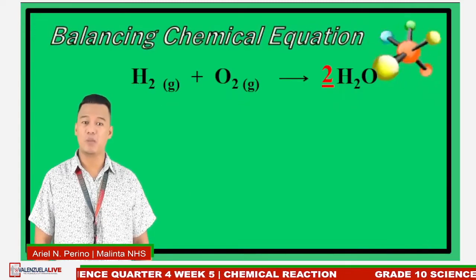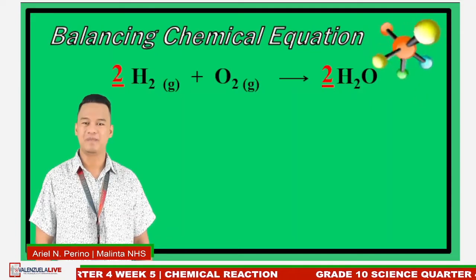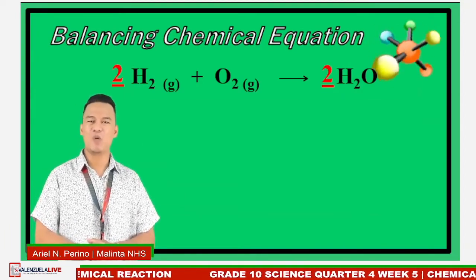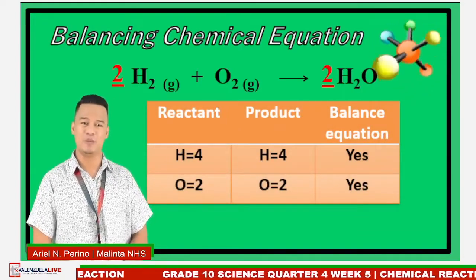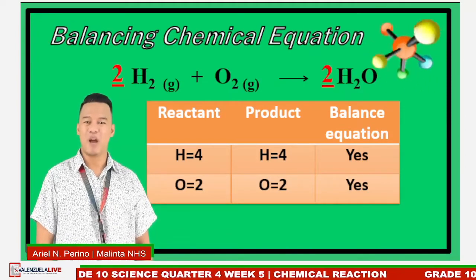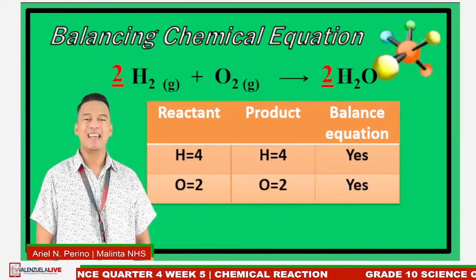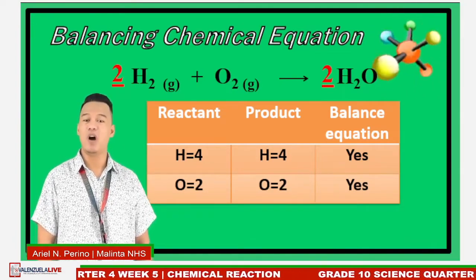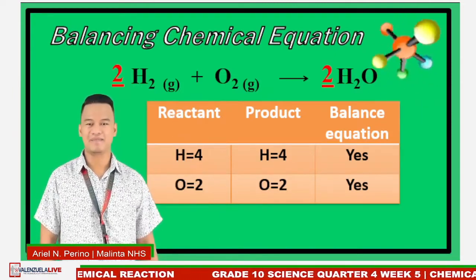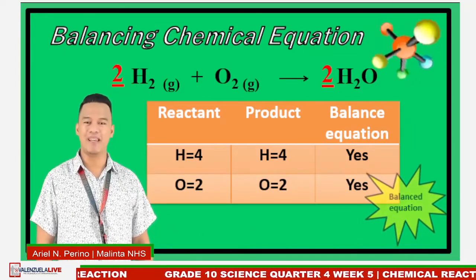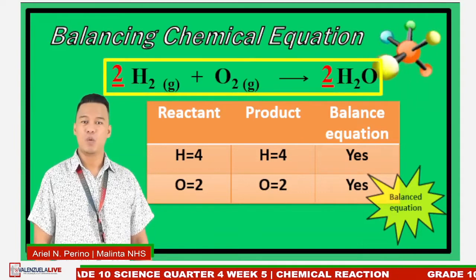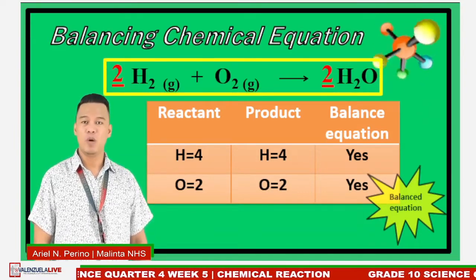Let's try adding coefficient 2 to hydrogen on the reactant side. Now let's count and check. On the reactant side: 2 times 2 equals 4 hydrogen atoms, and 2 oxygen atoms. On the product side: 4 hydrogen and 2 oxygen atoms. Is the equation balanced? Yes, the equation is already balanced! Therefore, the balanced equation is: 2H₂ reacts with O₂ to form 2H₂O — two hydrogen molecules react with one oxygen molecule to form two water molecules.